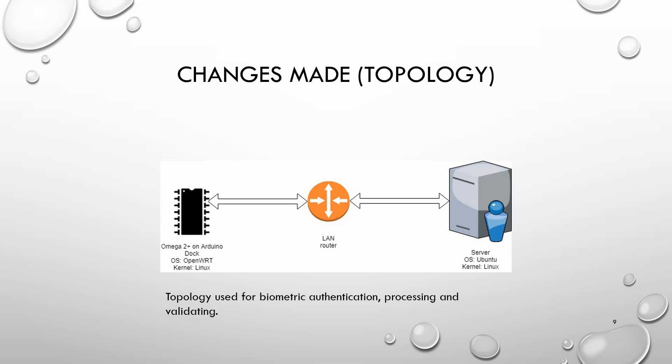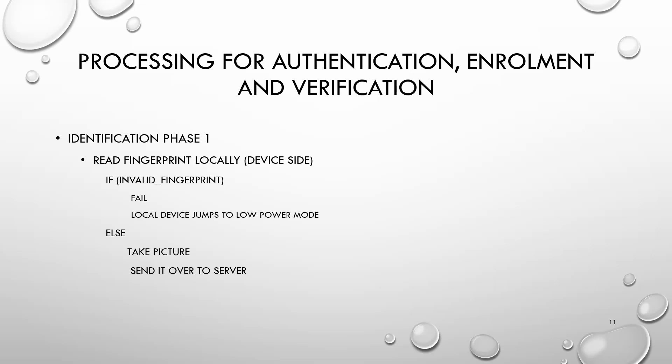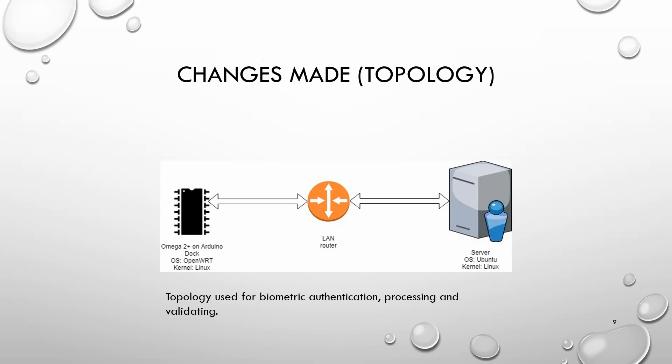Here's an illustration that gives the gist of the topology. Processing involves two phases: enrollment and identification. The enrollment phase involves registering a fingerprint locally, capturing a close-up shot, and sending the image to the server. The identification phase occurs in two stages — stage one is local (client side): if an invalid fingerprint is presented, authentication fails and the client jumps to low power mode or waits for the next input. If a valid fingerprint is presented, the client initiates photo capture and sends it to the server.